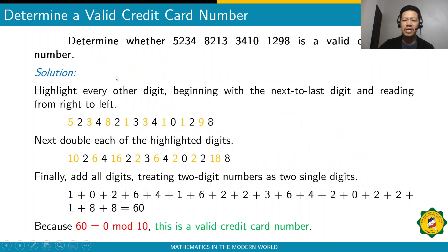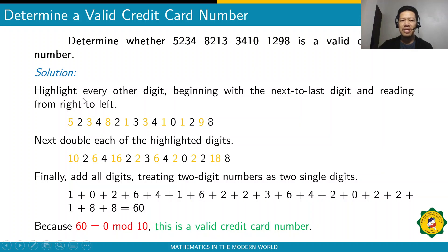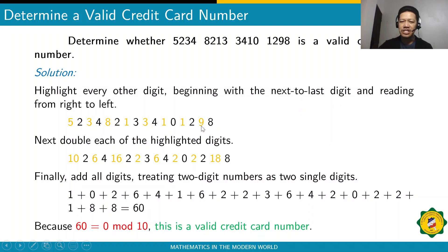Let's have an example. Determine whether this is a valid credit card number. We'll follow the steps described. First, highlight every other digit beginning with the next-to-last digit, reading from right to left. So you start with this 8 here — the next-to-last digit is 9 — so you highlight that and continue alternating: 9, 1, 3, 1, 8, 3, 5.